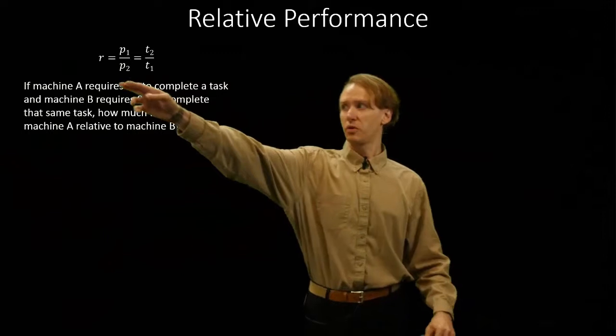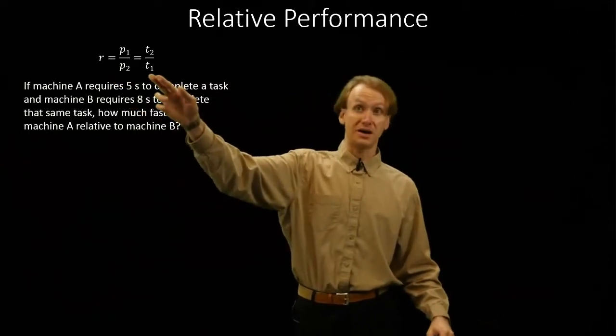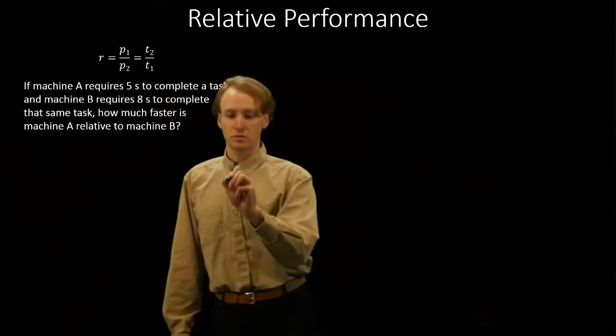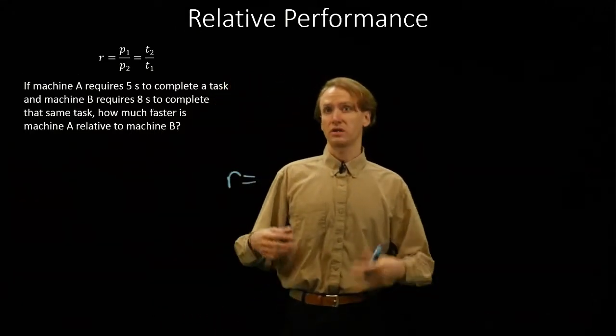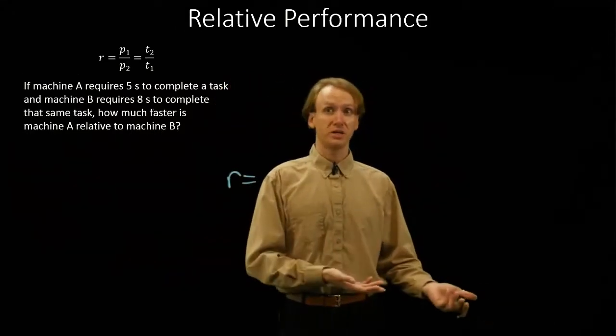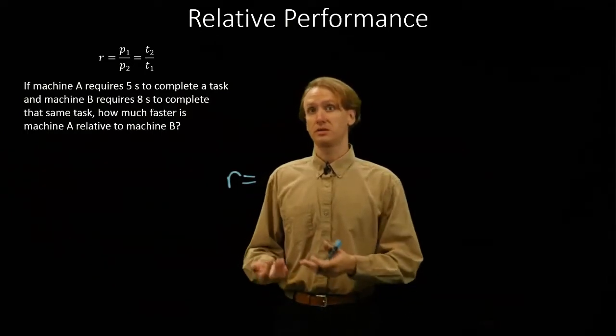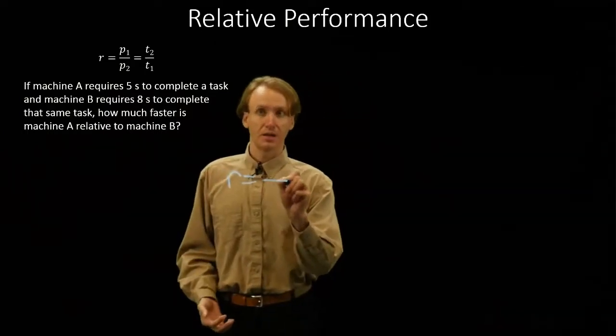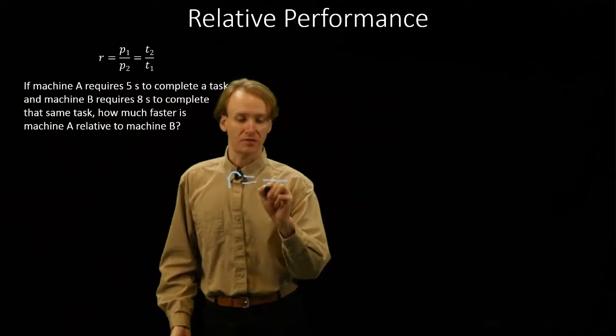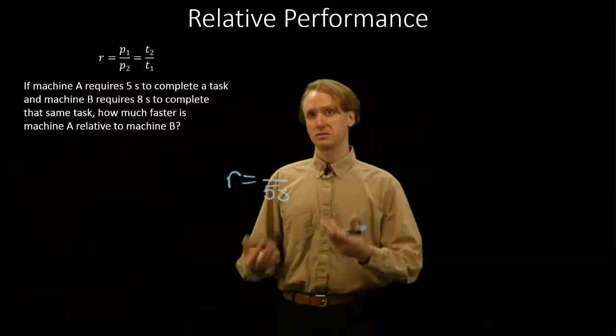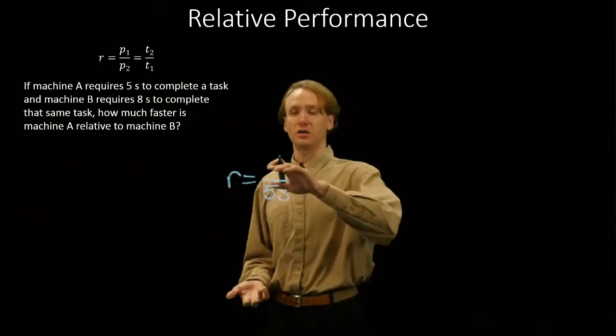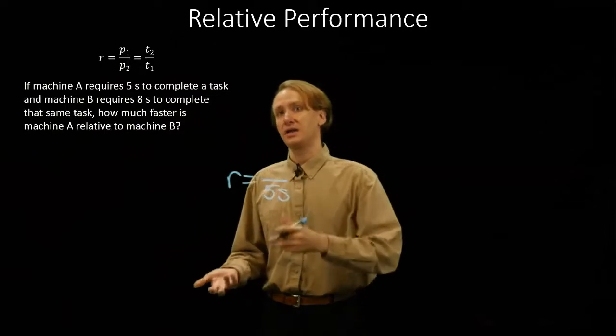So again, we'll have our relative performance equation and we'll be interested in time here. So again, we're looking at machine A relative to machine B. Machine A is going to be time one. It takes machine A five seconds to solve this task. Machine B then is going to be number two. So it's going on the top where we have eight seconds.